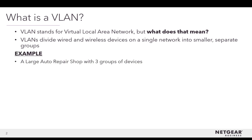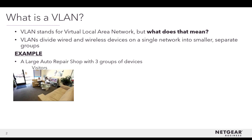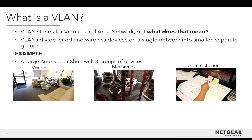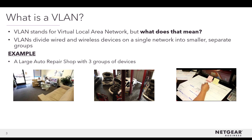Let's look at this further with this example. In a large auto repair shop with three groups of devices: the first group is for visitors, the second group is for mechanics, and the third group is for administrators. All three groups would like to access the internet at the same time but be separate from each other. The IT administrator divided the three groups into three separate VLANs.